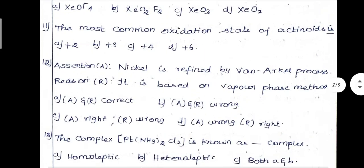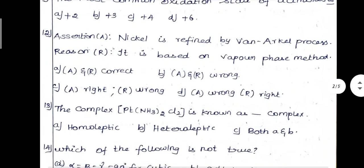The 12th question: the assertion is that nickel is refined by the van Arkel process. The reason given is that the process is based on vapor phase method. The van Arkel process is indeed based on the vapor phase method, so R is correct but A is wrong. Therefore option D is correct.